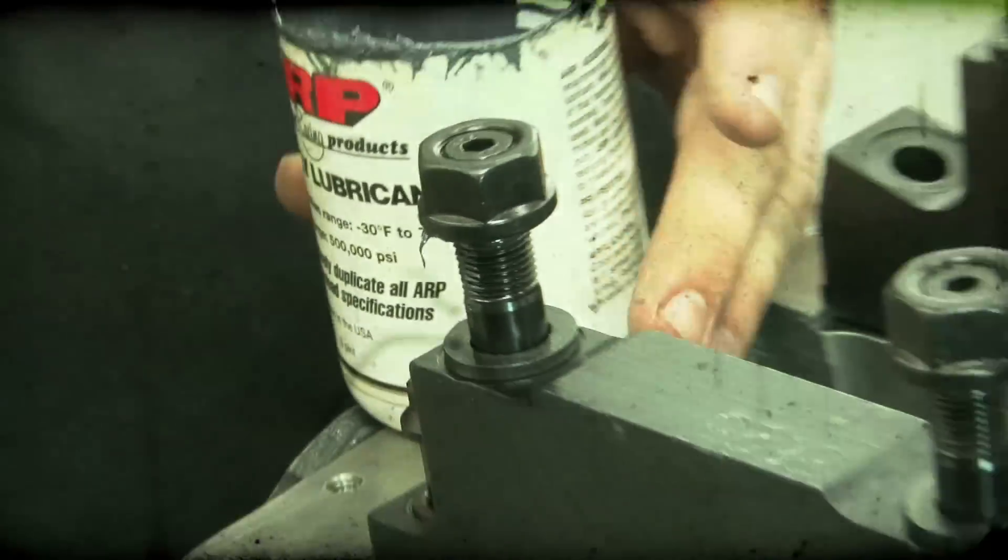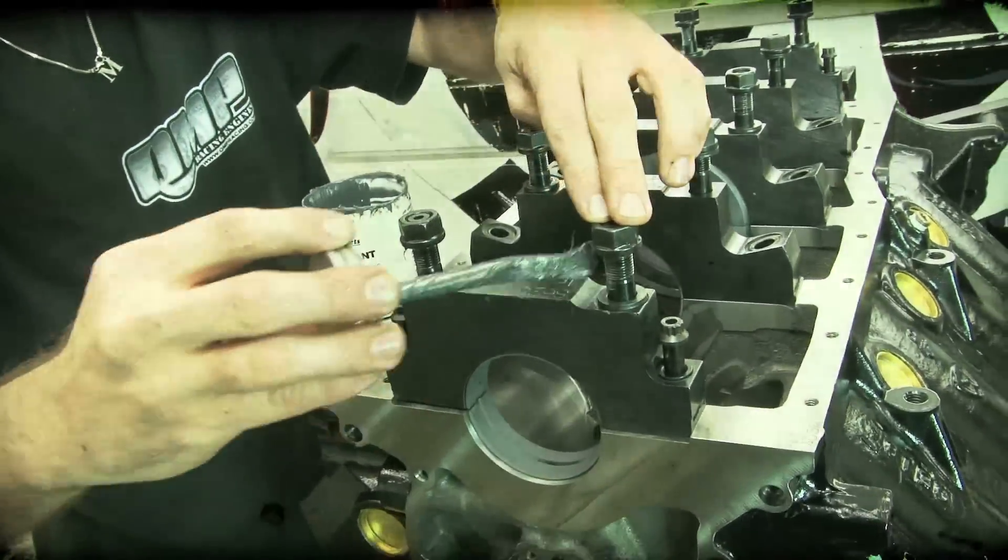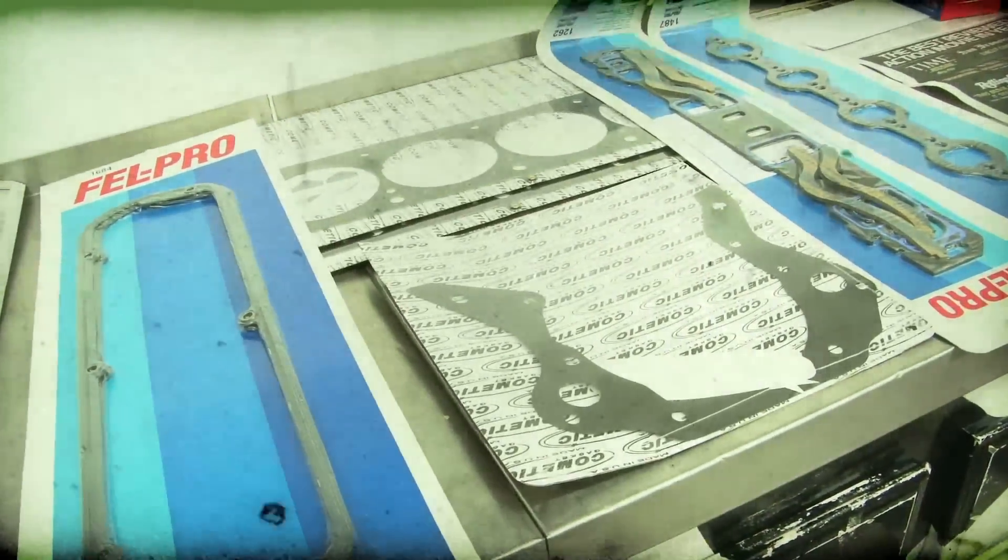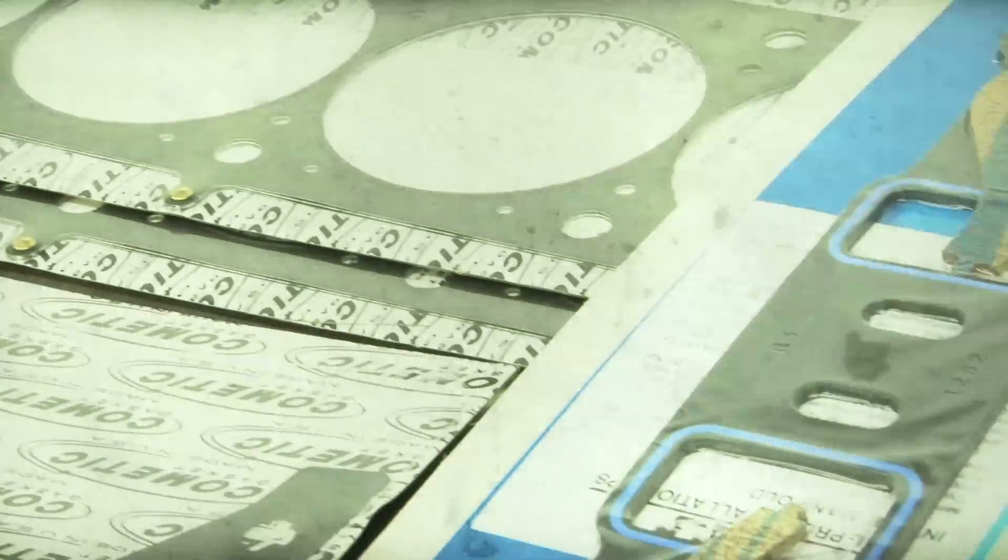Acting as the glue to hold all our components together are a full line of ARP bolts and studs, as well as Felpro and Cometic gaskets that were supplied by NetGaskets.com.